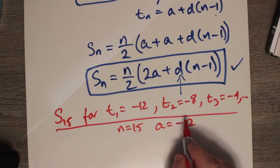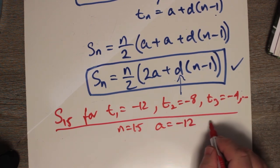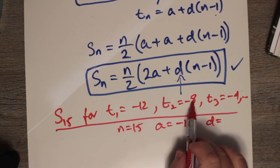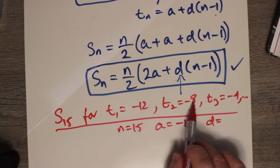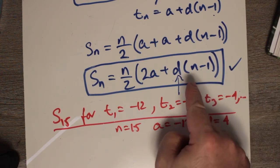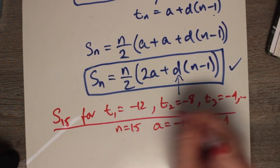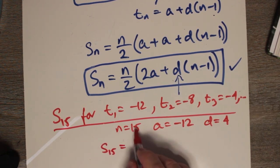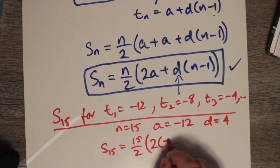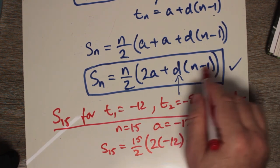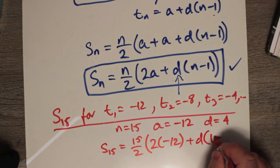What about the common difference? It's really t2 minus t1: -8 minus -12, well that's like -8 plus 12, and that's 4. I'm going to apply this formula because we don't know the last term. S15 equals 15/2 multiplied by 2 times -12 (because that's what a is) plus d times (n - 1), which is 15 - 1, which is 14.